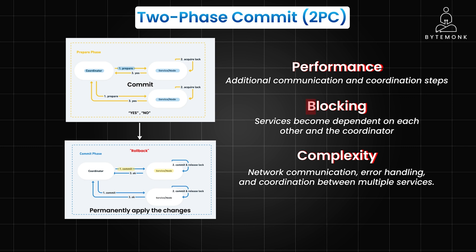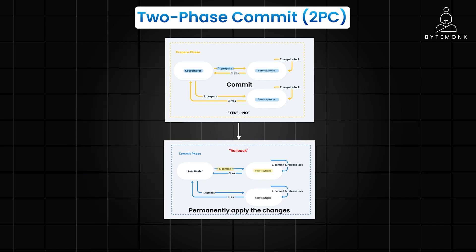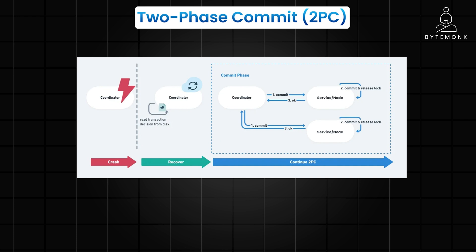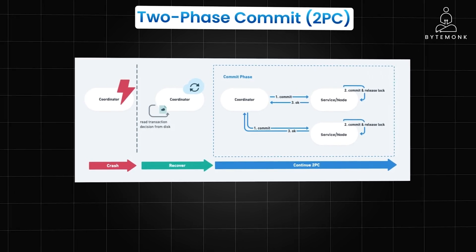2PC is often called a blocking atomic commit protocol, or anti-availability protocol, because all nodes must be up for it to work. If a coordinator dies, all nodes would have to wait to hear the final decision. After receiving prepared responses from all nodes, the coordinator must write the final decision — either commit or abort — to disk before sending it to other nodes, so that in case the coordinator dies mid-protocol, it knows how to recover.